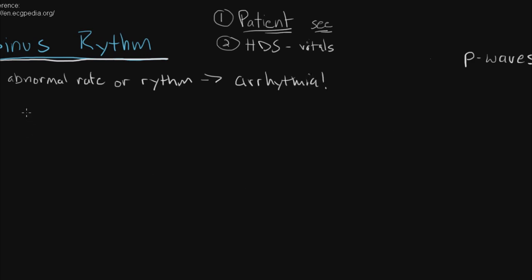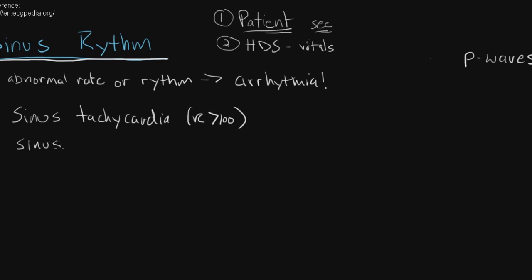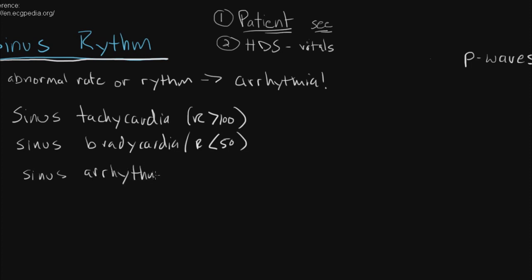The most common tracings you usually find are sinus tachycardia — that's when you have a sinus rhythm but the rate is greater than 100. You can also have sinus bradycardia, when your rate is usually less than 50. And you can have something known as sinus arrhythmia, which is when you have a normal rate but beat-to-beat variation. This is most commonly due to respiration, especially in kids — when you inhale and exhale it can cause beat-to-beat variation, and that is normal and physiologic.